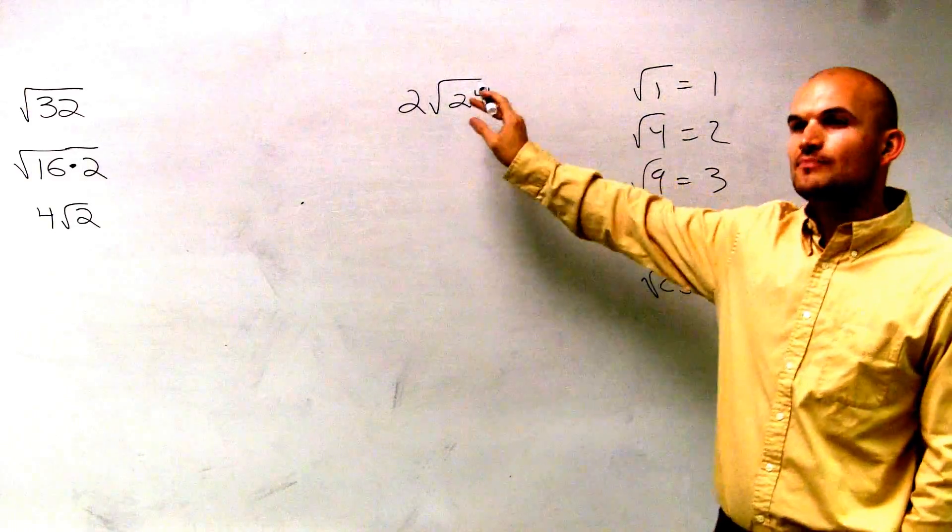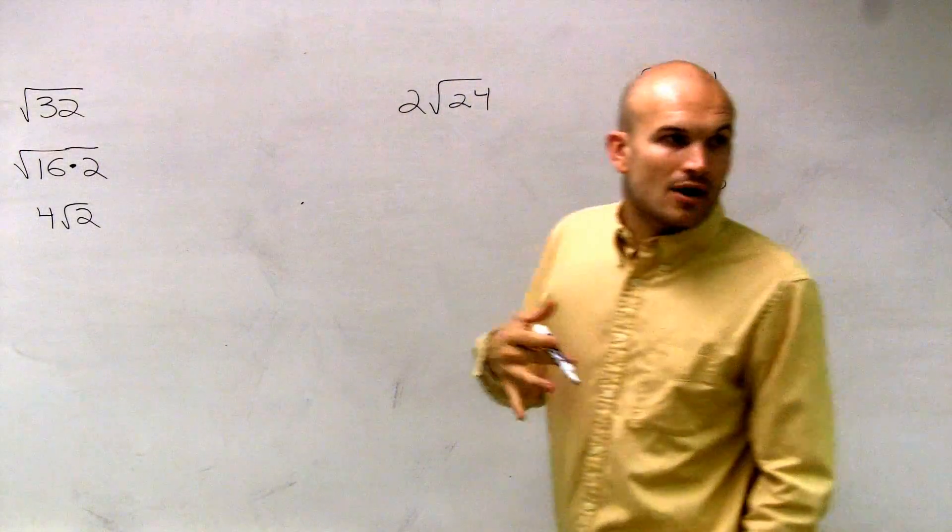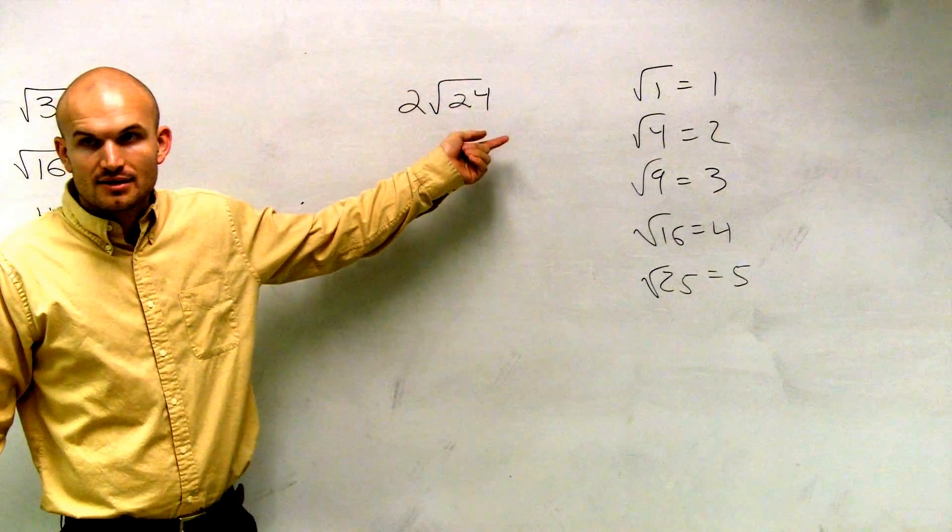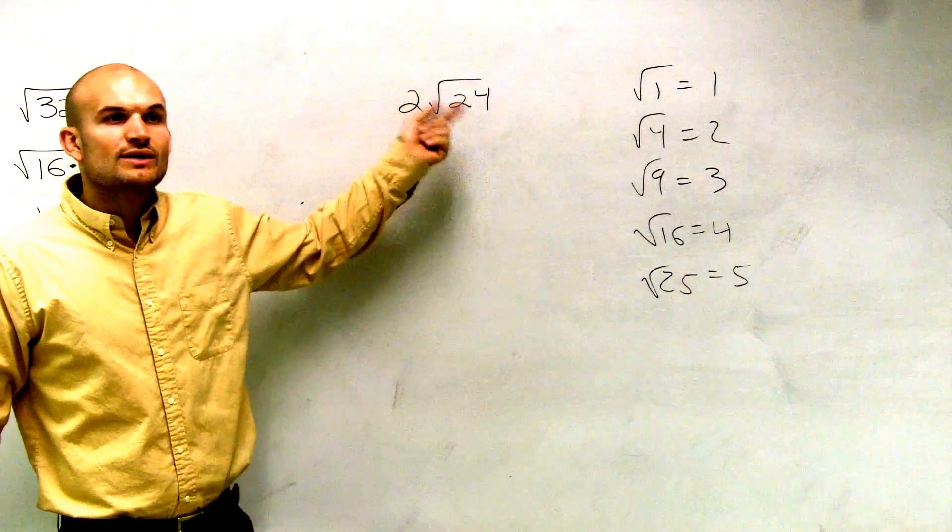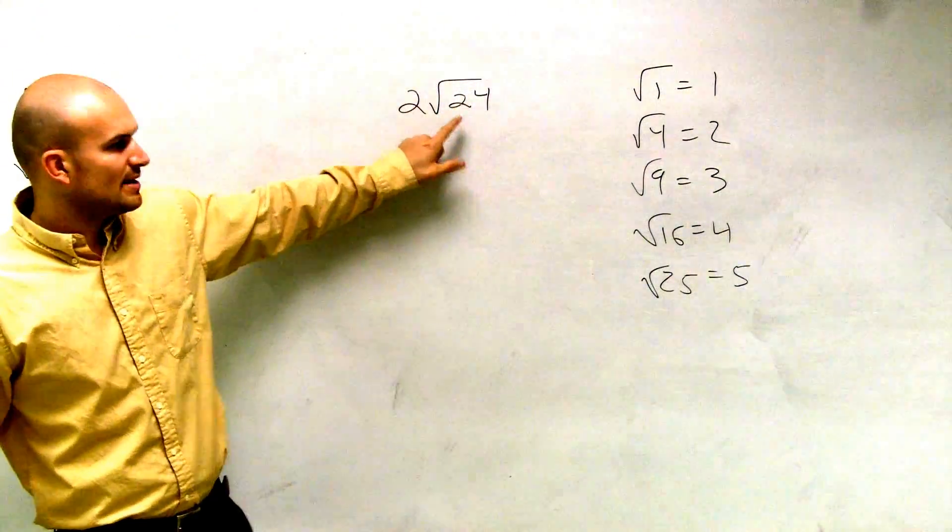So when I'm trying to simplify this, what I want to do is take out any square numbers I can. So I'm going to rewrite this if there's a way I can rewrite this in a simpler manner. Let's think about this.